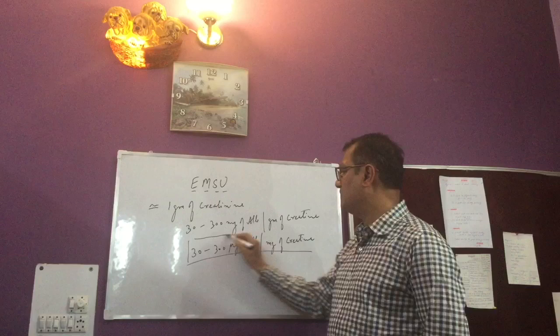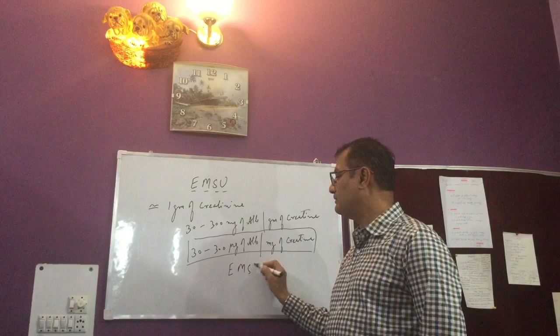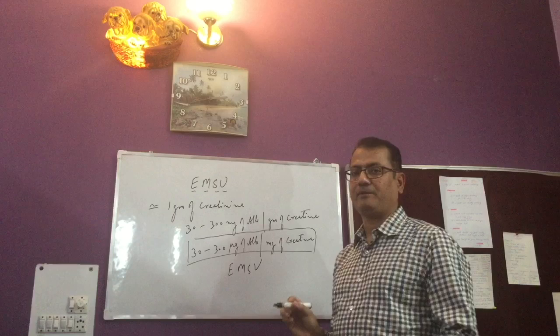So this is the definition we follow in clinical practice, that if it is 30 to 300 micrograms of albumin per milligram of creatinine in an early morning spot urinary sample, then this is what is defined as microalbuminuria.